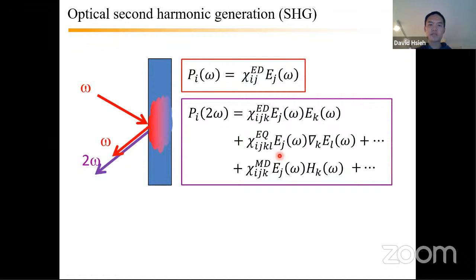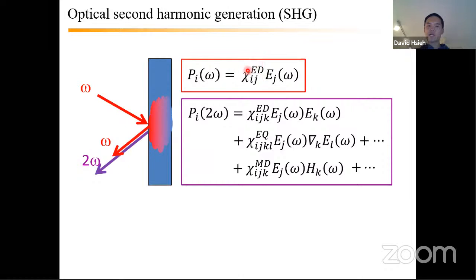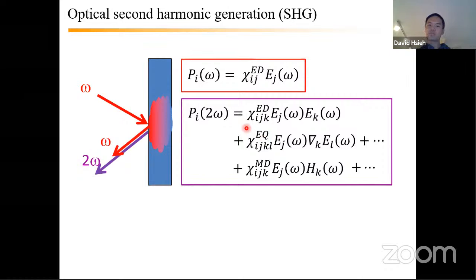The particular nonlinear response being examined today is second harmonic generation — the emission of light at twice the frequency of the incoming beam. In linear response, measuring omega-in to omega-out, one is primarily governed by the electric dipole second-rank tensor. For SHG, one has to worry about additional terms, predominantly the electric dipole response involving two electric fields inducing polarization oscillating at 2ω.